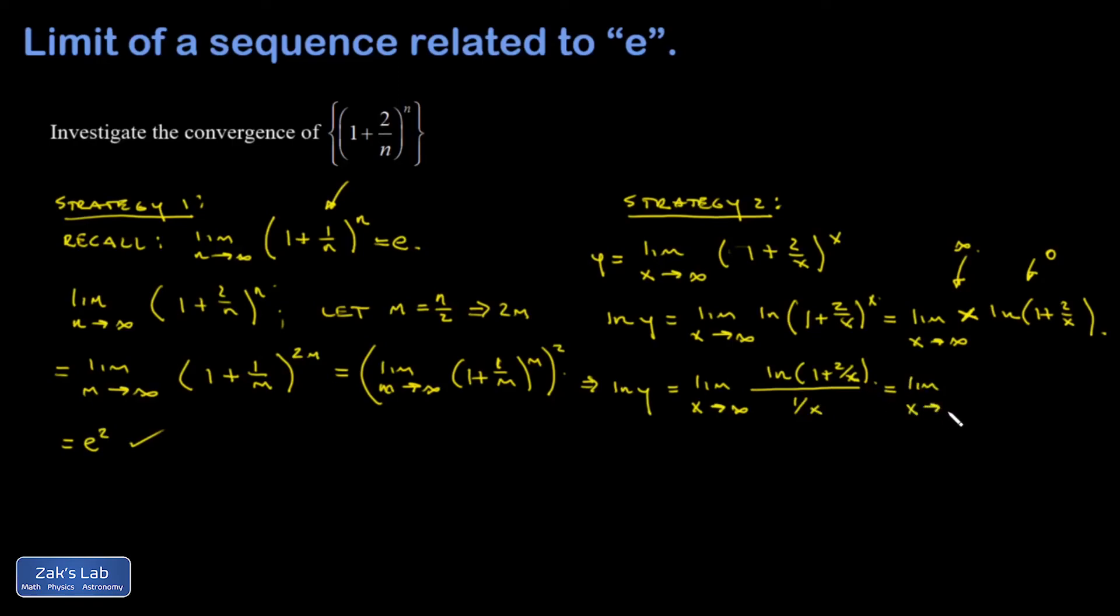So I'm allowed to differentiate the numerator and differentiate the denominator separately. So that numerator is going to give me a 1 over 1 plus 2 over x multiplied by the derivative of 1 plus 2 over x. That's the chain rule. And 2 over x is like a 2 times x to the negative 1. So I'm going to get negative 2 times x to the negative 2. In other words, negative 2 over x squared. And then in the denominator, I have an x to the negative 1. When I differentiate it, I get negative x to the negative 2.